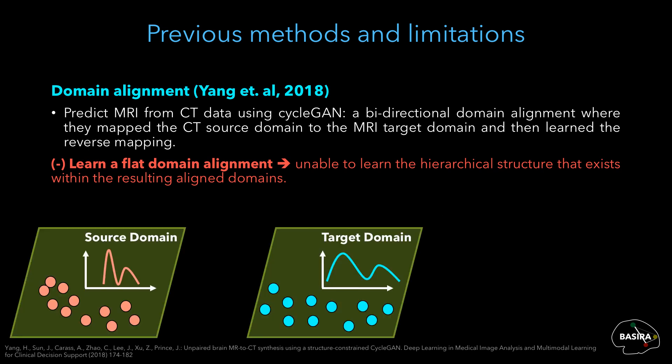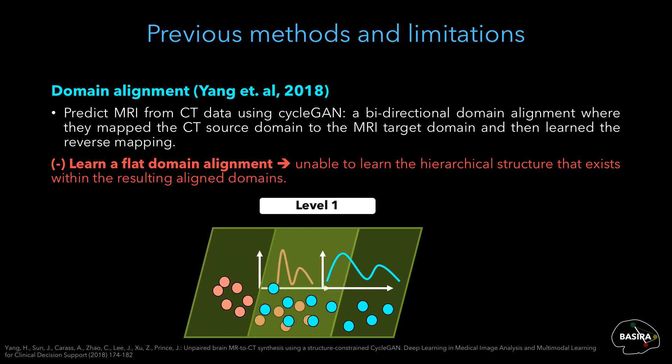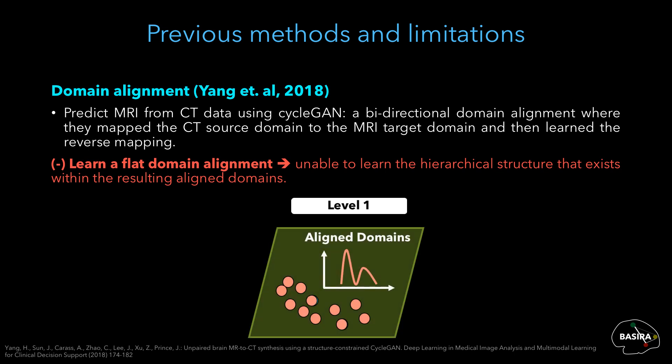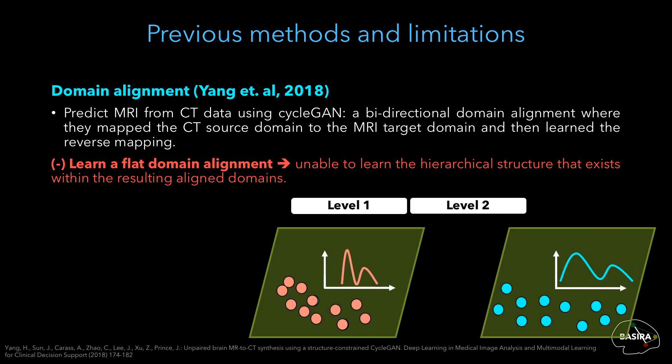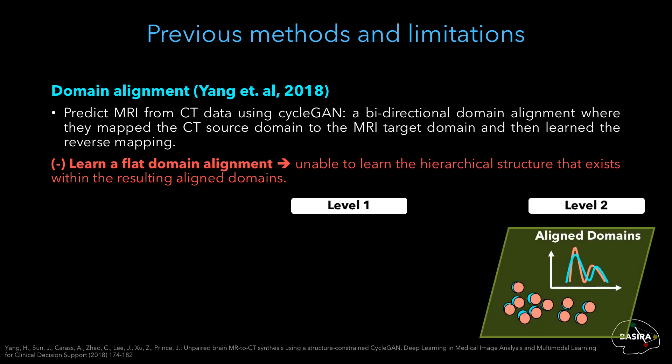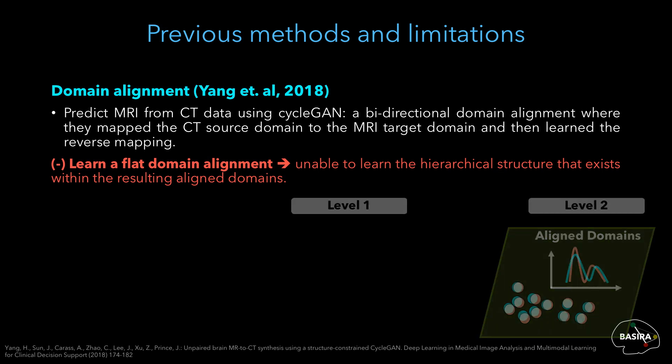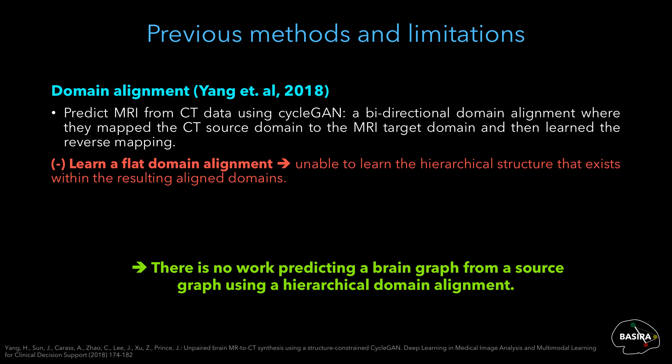These methods are unable to learn the hierarchical structure that exists within the resulting aligned domains. We mean by hierarchical alignment multiple and successive domain alignments where each alignment depends on the previous one. Here we illustrate an example of a hierarchical domain alignment with two levels. At the first level, we move the source to the target domain so that their distributions are slightly inlined. At the second level, we move the resulting inline source domain to the original target domain, improving the alignment of both distributions by capturing the hierarchical structure. To the best of our knowledge, there is no work predicting a brain graph from a source graph using hierarchical domain alignment.